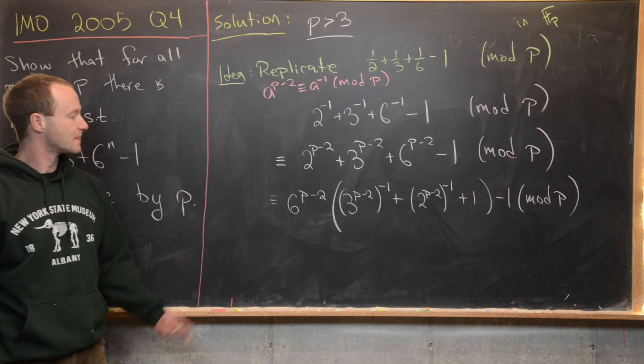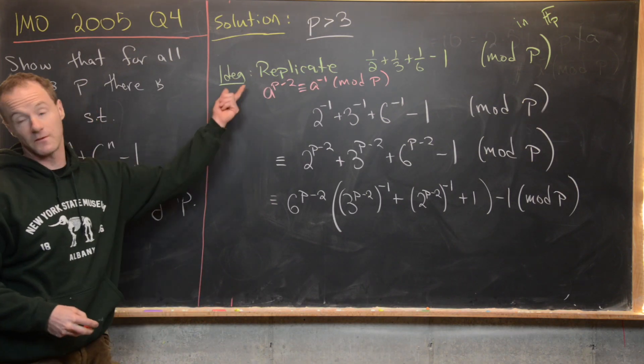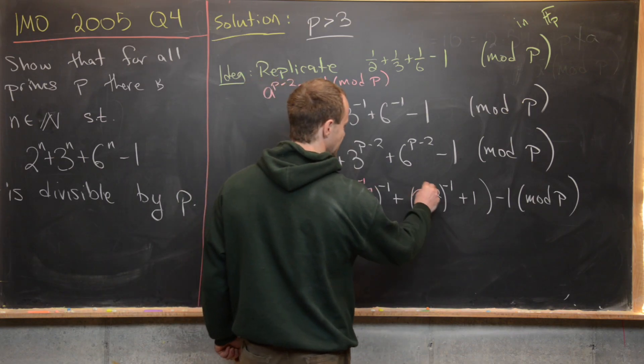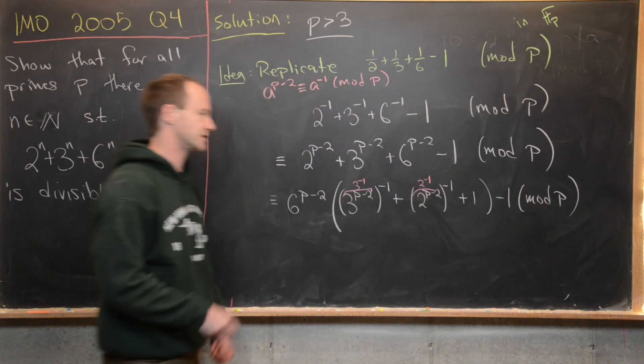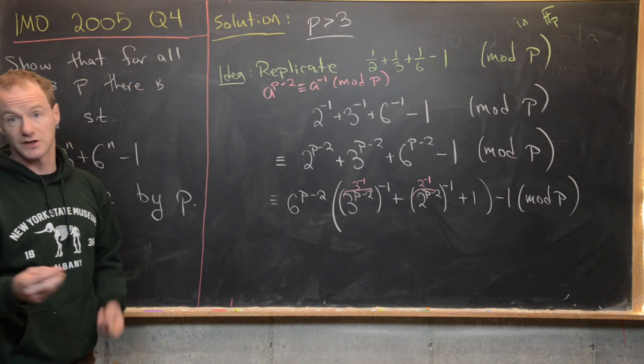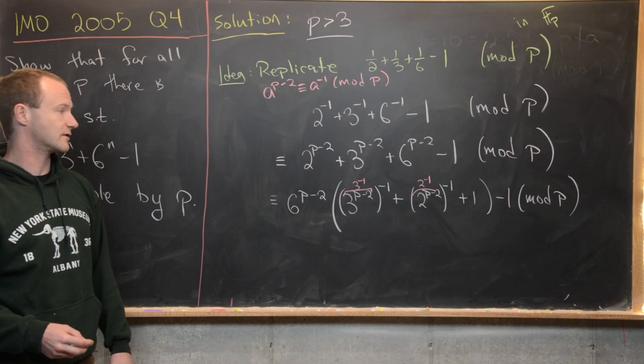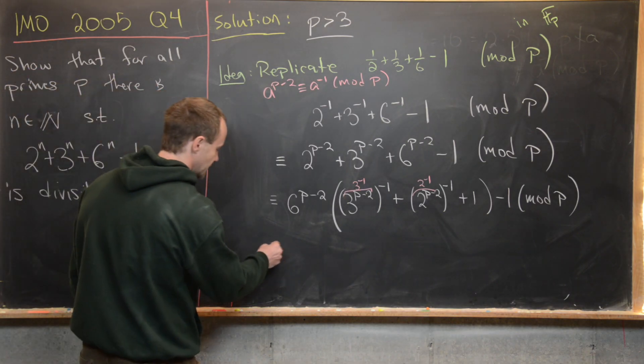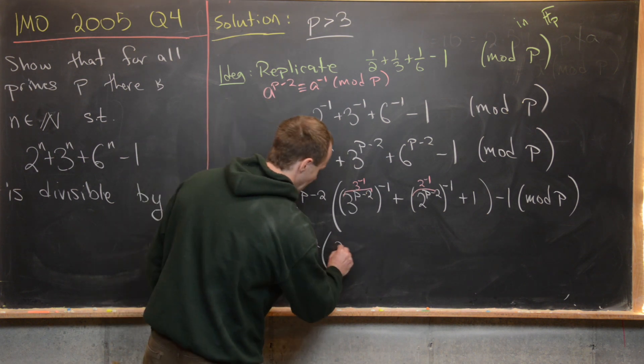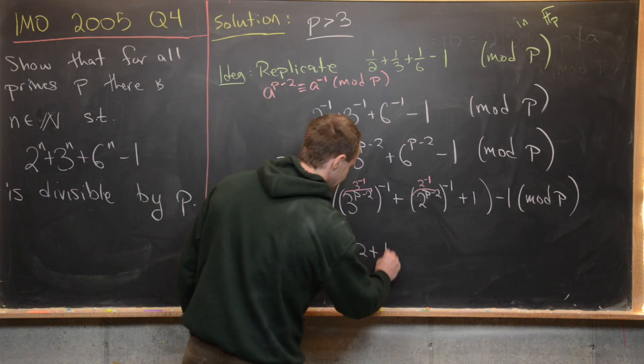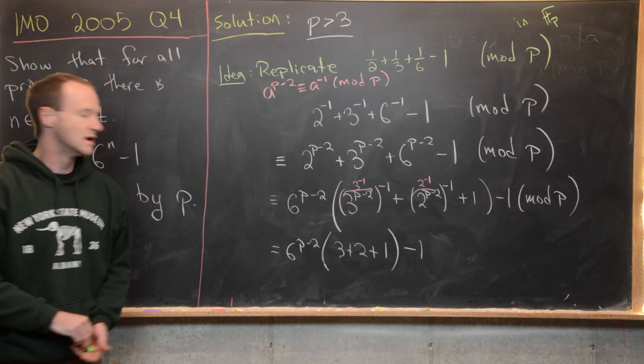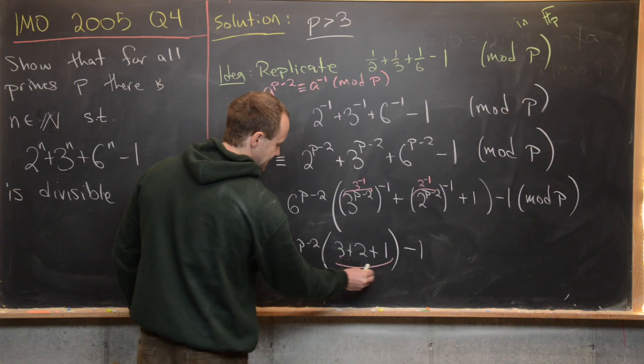But now we can apply Fermat's little theorem again to see that this is going to be 3^(-1) inverse and then this is 2^(-1) inverse. So 3^(-1) inverse is just going to be 3, just by the multiplicative inverse modulo p, same thing with 2^(-1). So we're left with 6^(p-2) and then we'll have 3 + 2 + 1 and then minus 1 because that's still on the outside. But these three numbers add up to 6 obviously. Then we have 6^(p-2) times 6, so that's going to give us 6^(p-1) - 1.